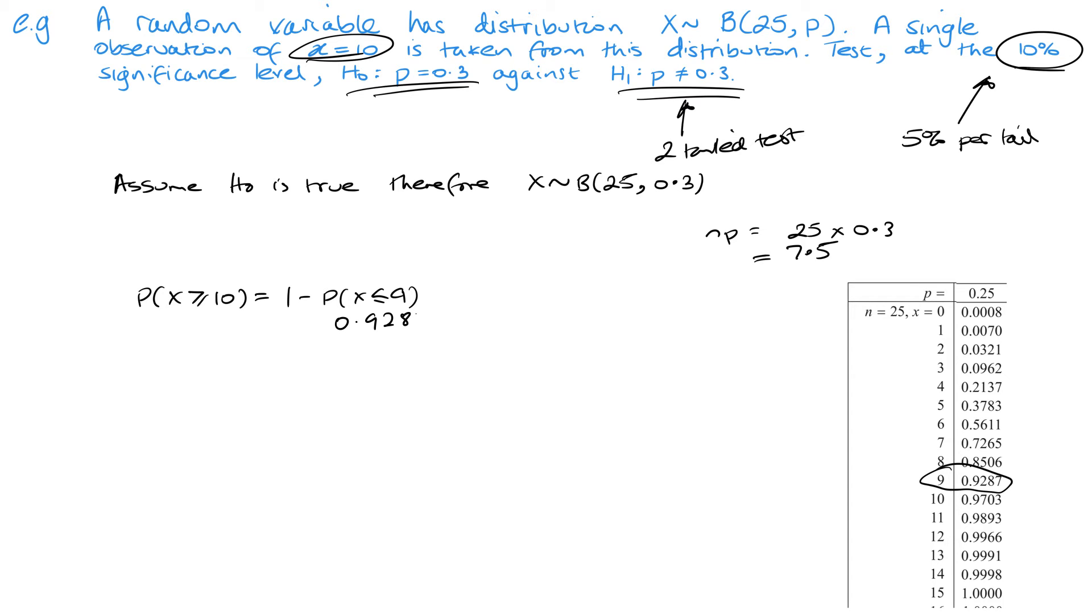That is 0.0713. Now we can see that this is greater than our 5%, therefore there is insufficient evidence to reject H₀. I always aim for two sentences at the end: one where I'm talking about whether there's insufficient or sufficient evidence to reject H₀, and then the second sentence I'd always link to the context of the question. In this case, the question has no context, so I've just put 'no reason to doubt p = 0.3', but if it did have context I would explain what it means within that context.